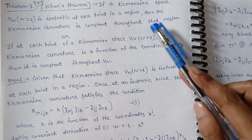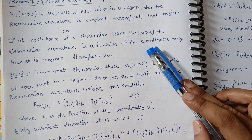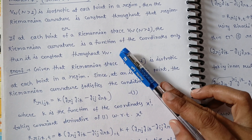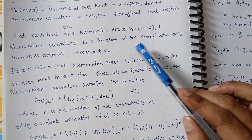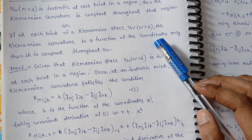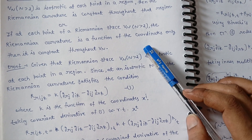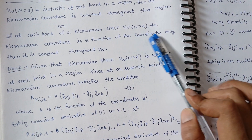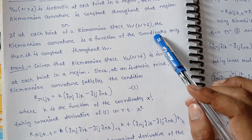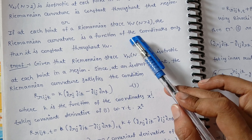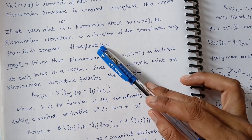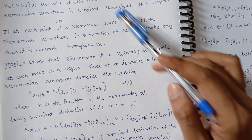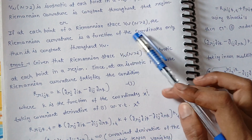This theorem also has another equivalent statement — you can keep both statements in memory, because this theorem can be asked by either statement. If at each point of a Riemannian space Vn the Riemannian curvature is a function of the coordinates only, then it is constant throughout Vn. Here we use the isotropic definition, where the curvature is a function of coordinates x_i only.